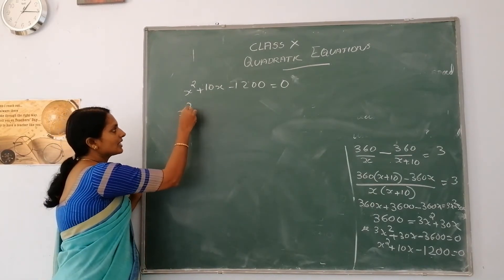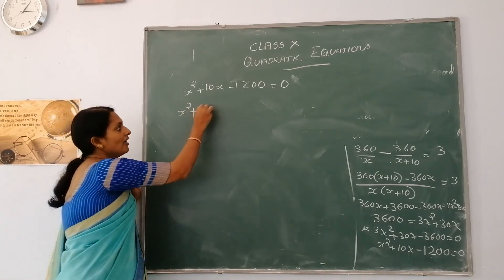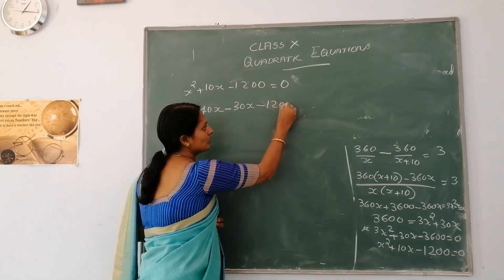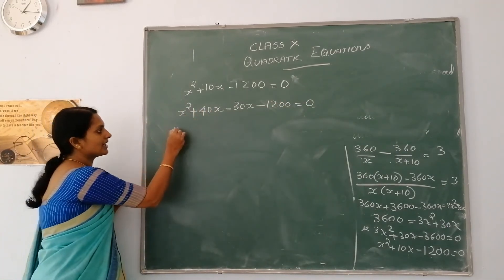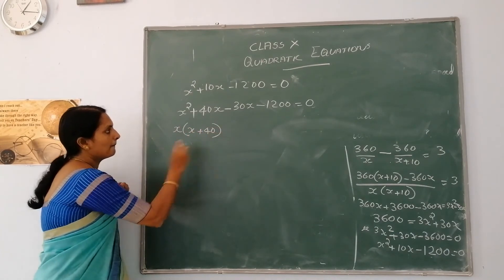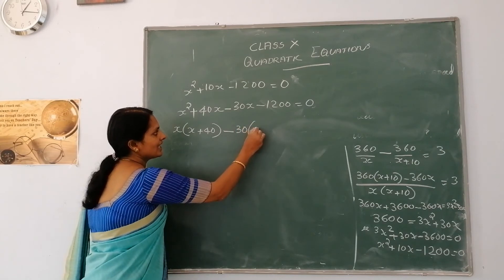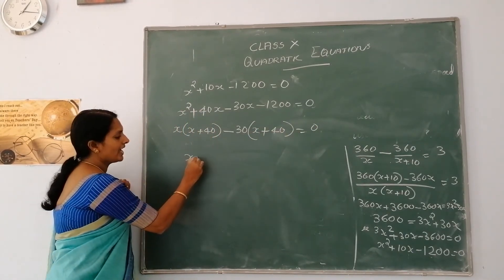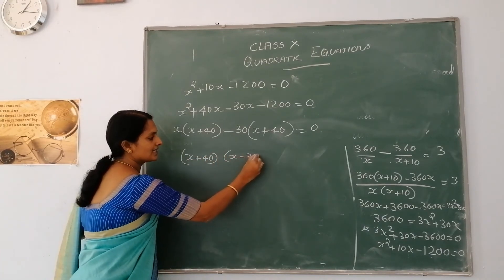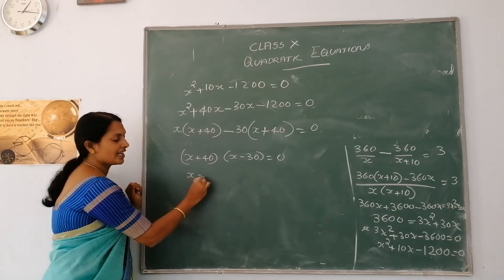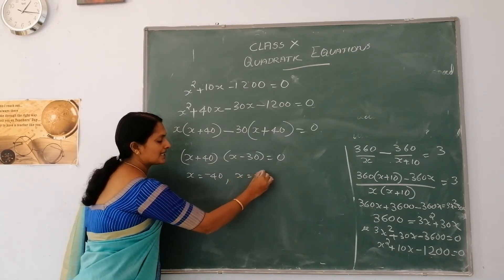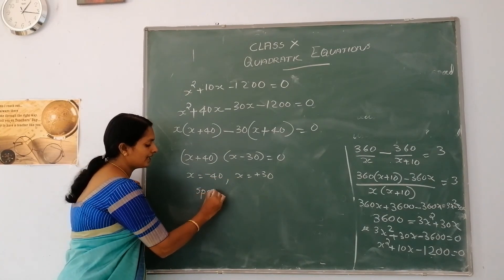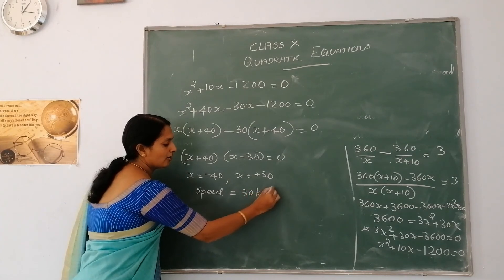Factorizing by splitting the middle term: x squared plus 40x minus 30x minus 1200 equals 0. Taking common factors: x into x plus 40 minus 30 into x plus 40 equals 0. That gives x plus 40 into x minus 30 equals 0. So x equals minus 40 or x equals 30. Since a negative value is not possible, x equals 30. Therefore, the usual speed is 30 kilometres per hour.